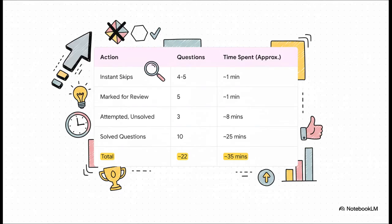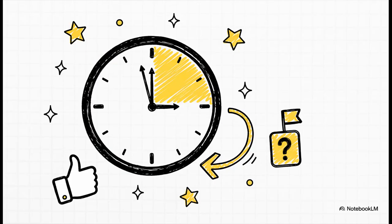Let's play this out in a 40-minute section. Those instant skips take you maybe a minute tops. The questions you mark for review, another minute. You might sink eight minutes into three tough questions you try but can't crack in time. But here's the magic: you've now invested 25 solid, focused minutes into solving 10 questions you felt good about. You've efficiently processed about 22 questions in only 35 minutes. And the best part? You've still got about five minutes left on the clock.